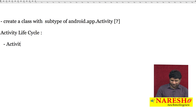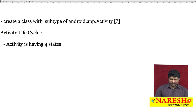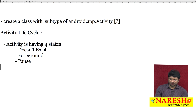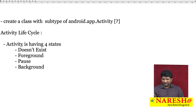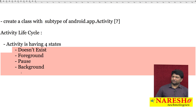Activity has four states. For each and every screen in Android, the activity has four states: does not exist state, foreground state, pause state, and background state. These are the four states of an activity.